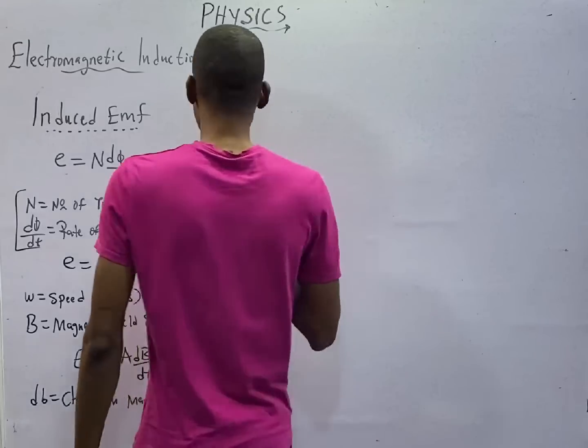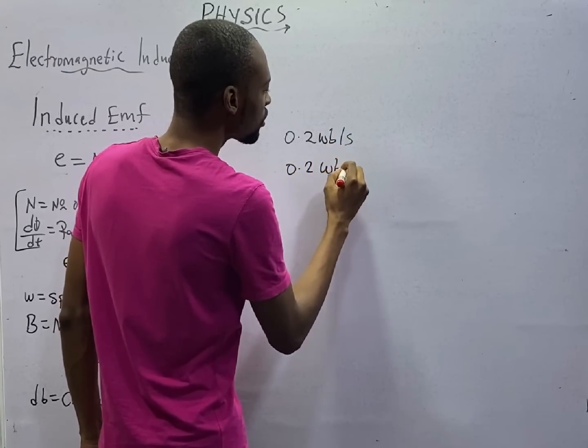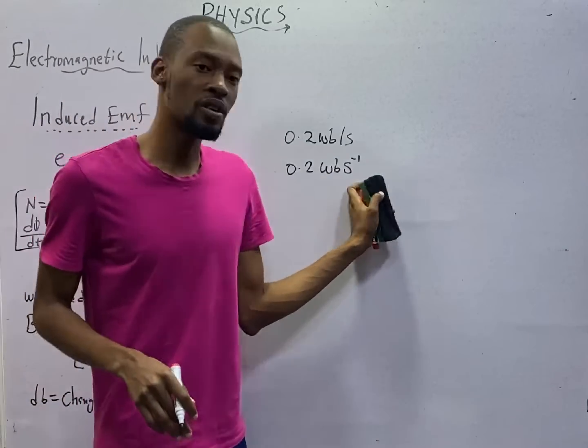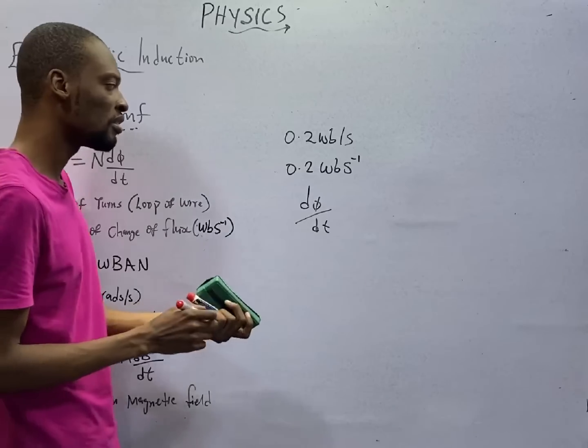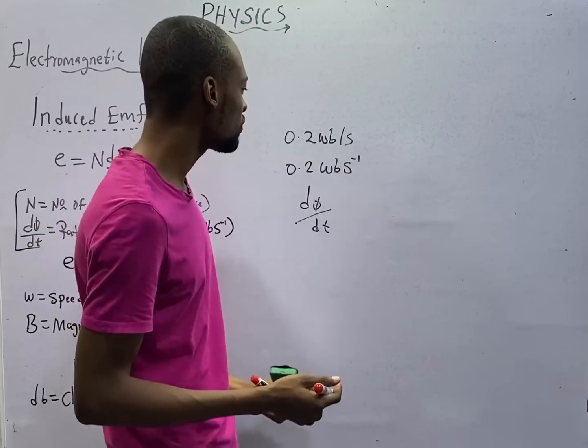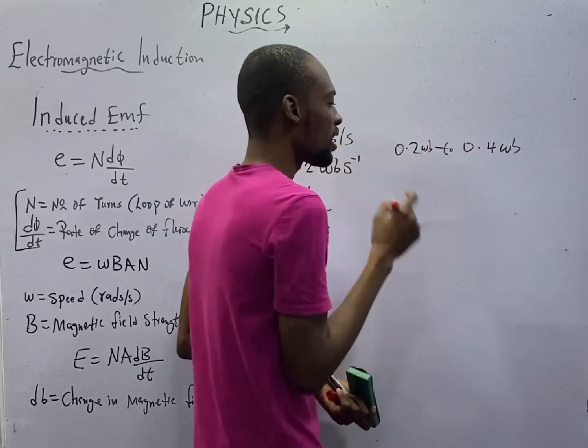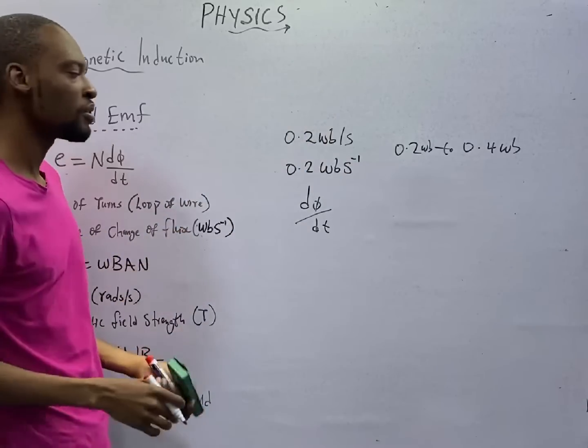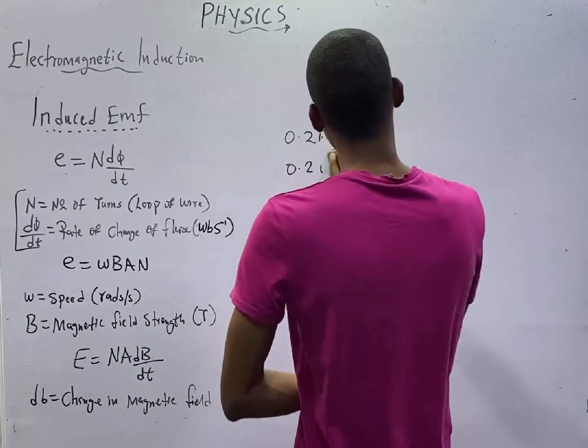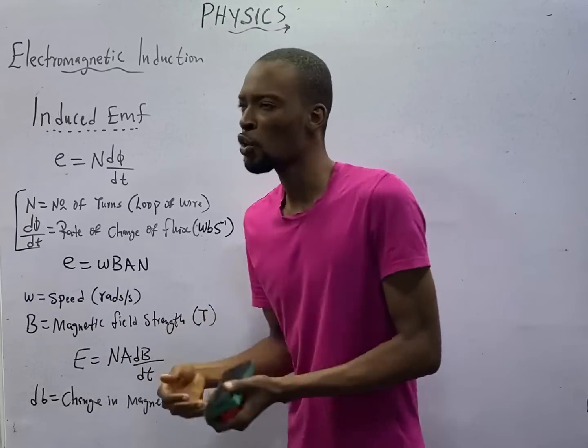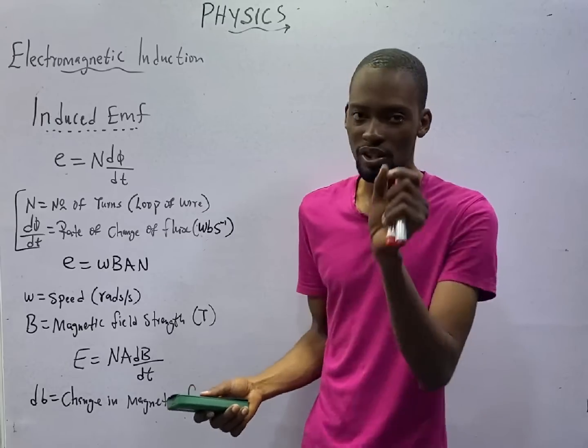If I give you a parameter, 0.2 weber per seconds, this is the rate of change of flux. Everything here is dΦ/dt. You are given everything. On the other hand, if you are given time and the same flux changes from 0.2 to 0.4 weber, only in weber, you will know that you are given the flux. If you subtract them, you will get the change in flux. Then you divide by the given time. You will see some questions and how to apply them. I am just trying to give you an overview so that you solve as many questions as possible.